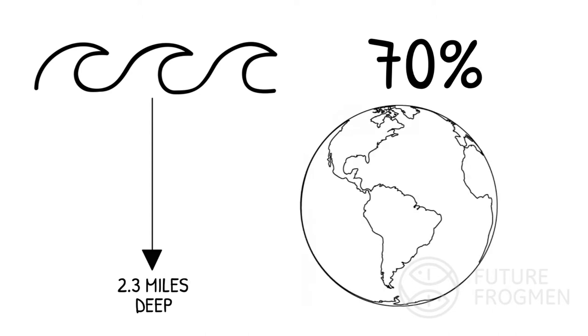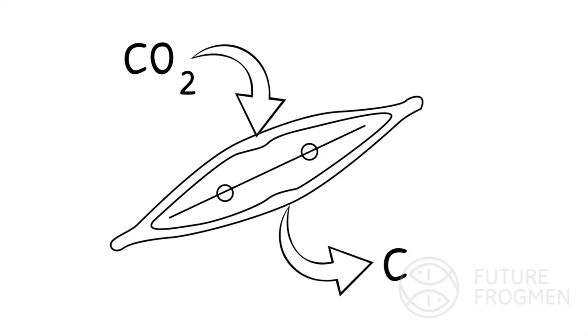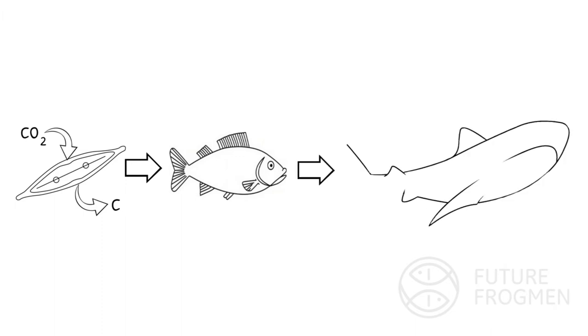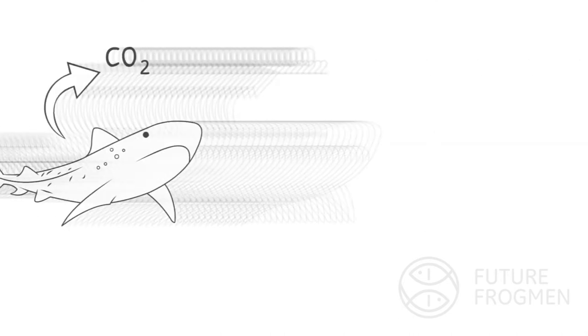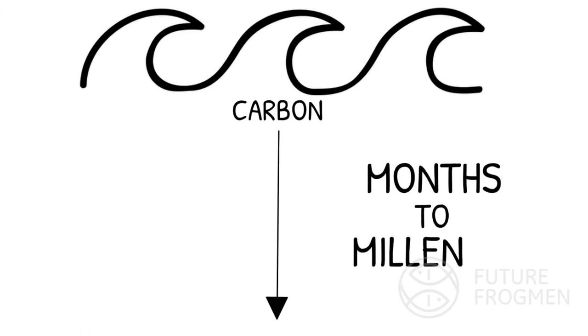The ocean can absorb and store so much carbon because it is deep and covers about 70% of the Earth's surface. The carbon dioxide absorbed by the ocean is converted into organic carbon by phytoplankton. As the organic carbon passes through the food chain, most of it is converted back into carbon dioxide. However, a small fraction is transported to depth where it is sequestered from the atmosphere for months to millennia.